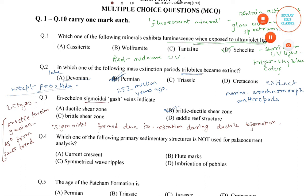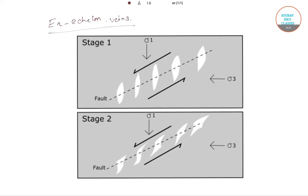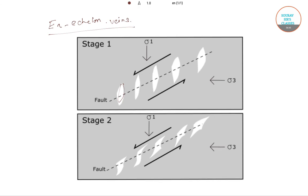And this is the pictorial representation of the formation of en-echelon veins. As we can see, in the first stage these gashes are formed, and in the second stage the sigmoidal shapes are formed.